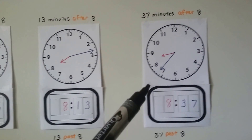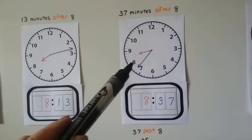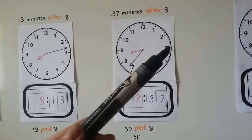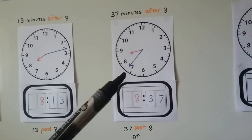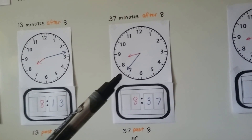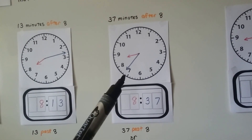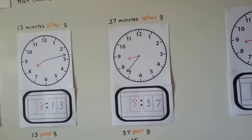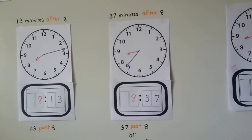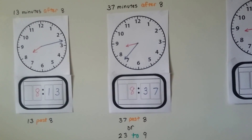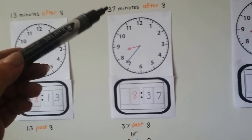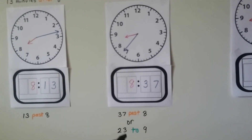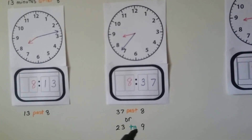Now the minute hand really moved — it's over here next to the 7, in between the 7 and the 8. If we count by fives: 5, 10, 15, 20, 25, 30, 35, then count by ones: 36, 37. We count by fives until we get close, then count by ones until we reach where it's pointing. That's 8:37, or 37 minutes after 8. We normally wouldn't say that many minutes after — you could say 37 past 8, but usually people say 23 to 9.